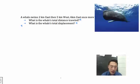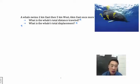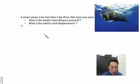And then for some reason it swims six kilometers to the east once more. Now this is what I call a very confused whale, so before we start I'm going to draw some confusion question marks over the whale. In order to calculate total distance, all you have to do is add up all of the values.